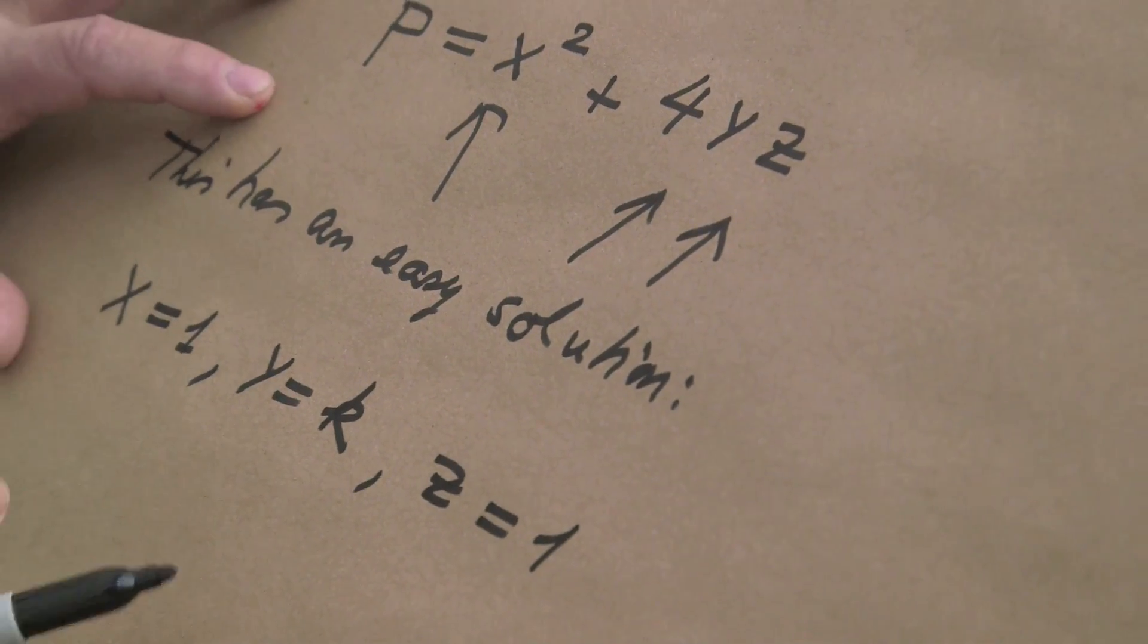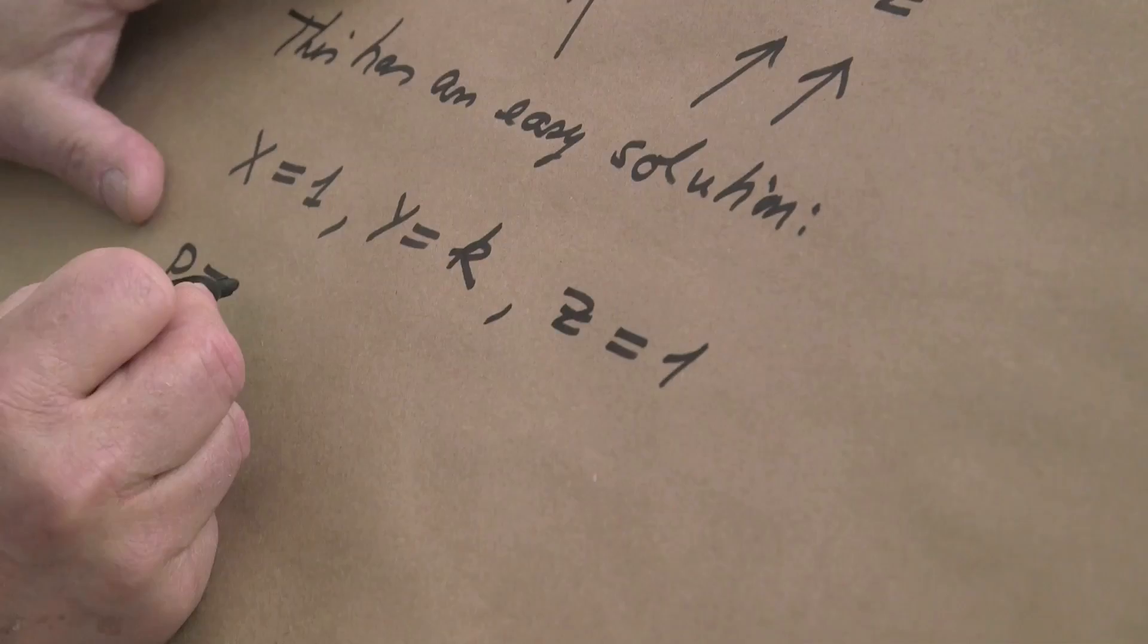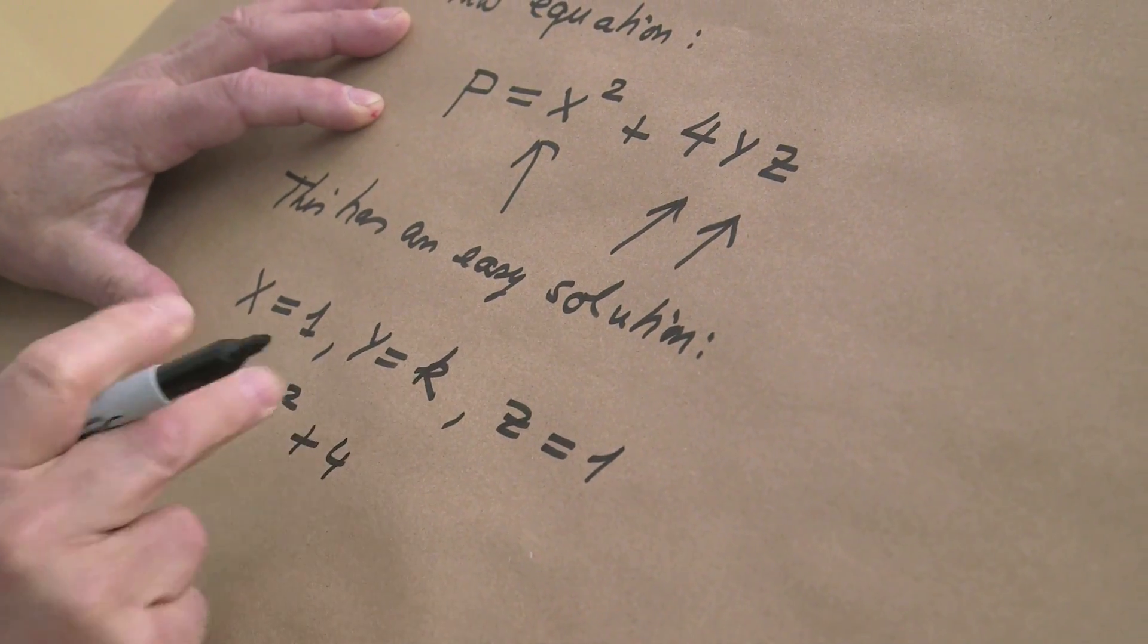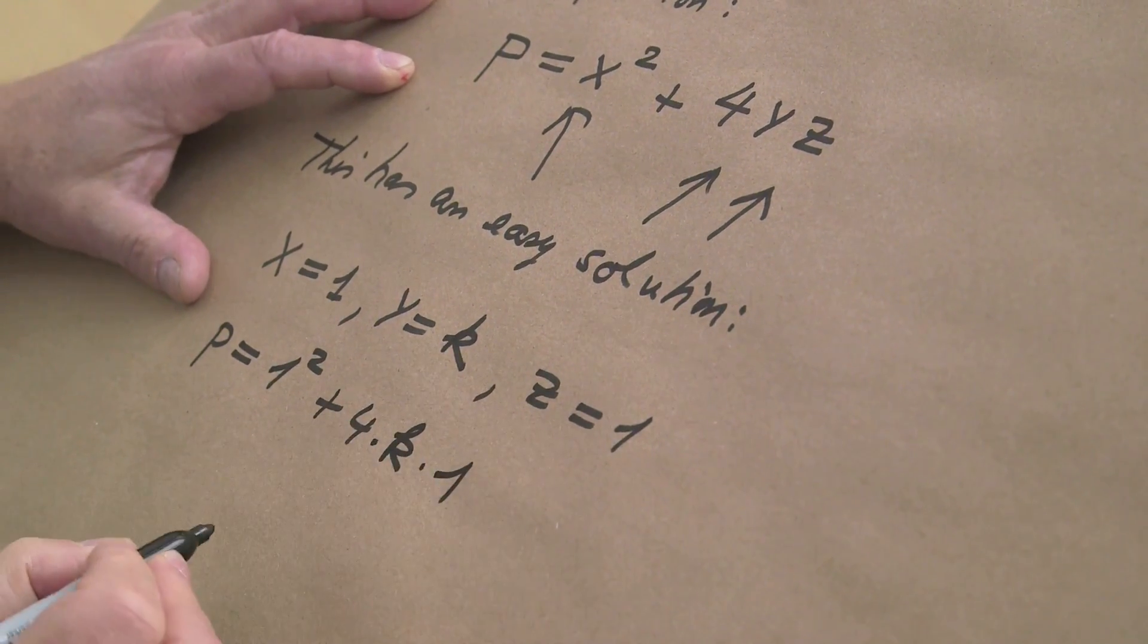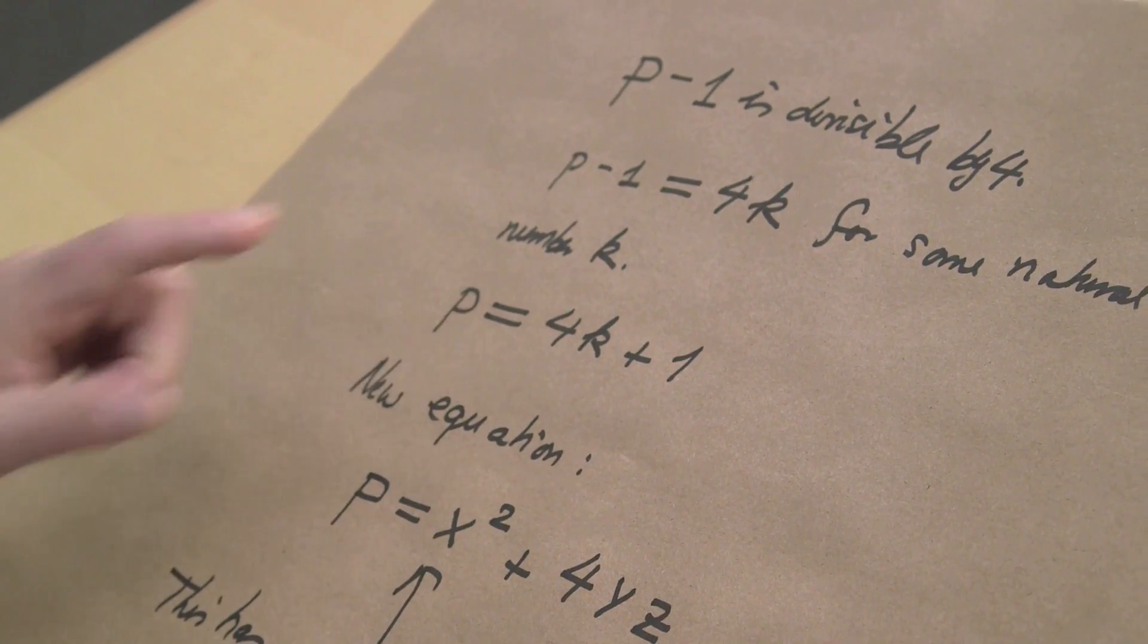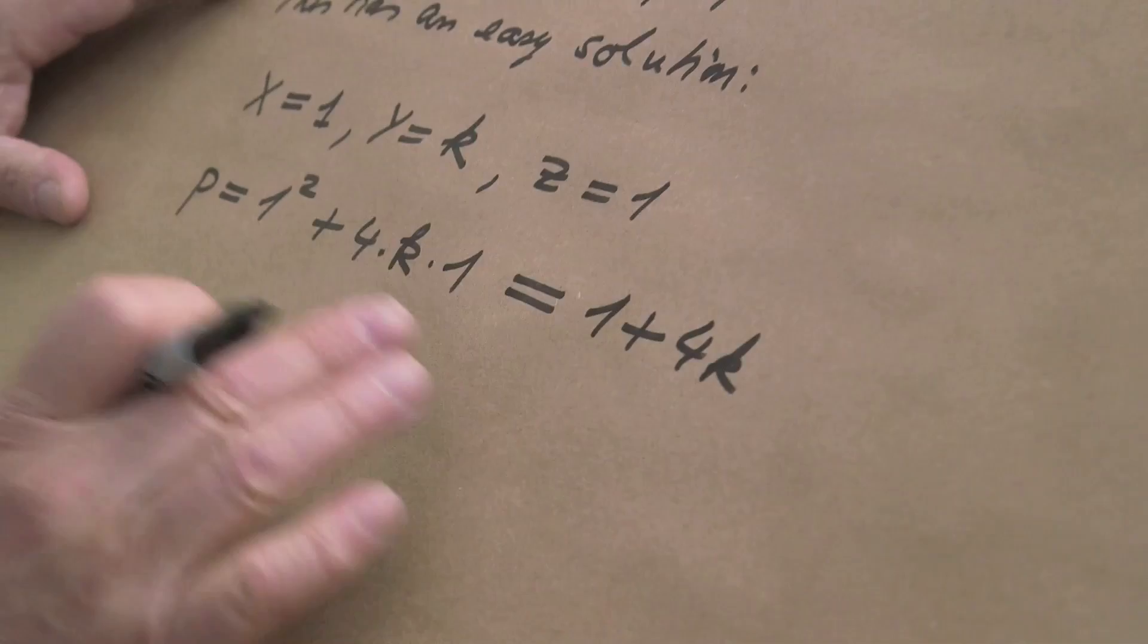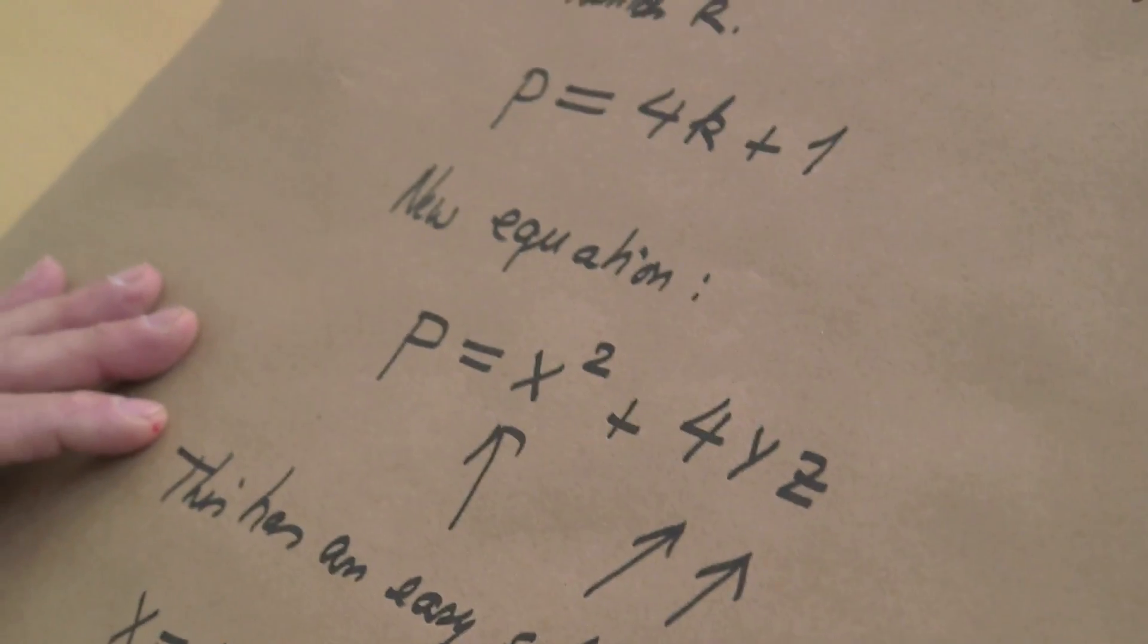And what we see, if we put it in, then p is equal to 1 squared (x equals 1) plus 4, y is k, k times z is 1. And if we compute this, then this is 1 plus 4k, and that was our definition, our formula for p. So we have found at least one solution. That's the first important message.